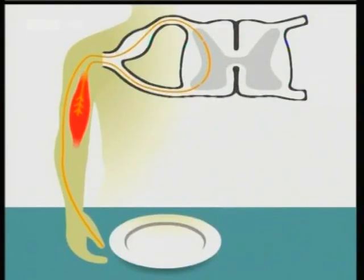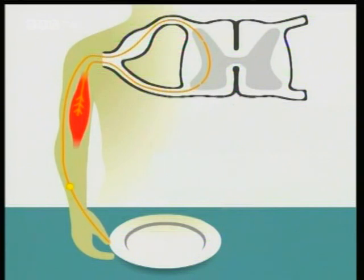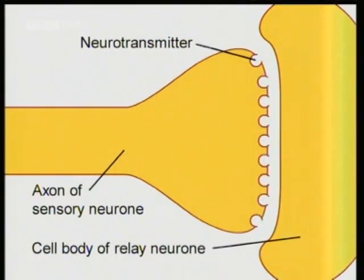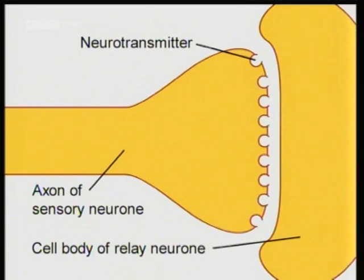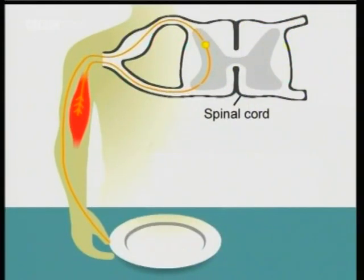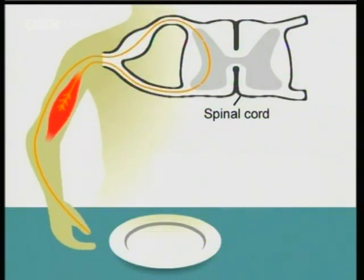But how does the reflex arc work? If you touch a hot plate, receptors in your fingers sense the heat. The stimulus goes along a sensory neuron as an electrical impulse to the central nervous system in the spinal cord. There, the signal passes from the sensory neuron to a relay neuron, across a junction called a synapse, using chemicals called neurotransmitters. The relay neuron passes the impulse on to a motor neuron, and the motor neuron carries the impulse to an effector, such as a muscle, which takes action and moves your hand.